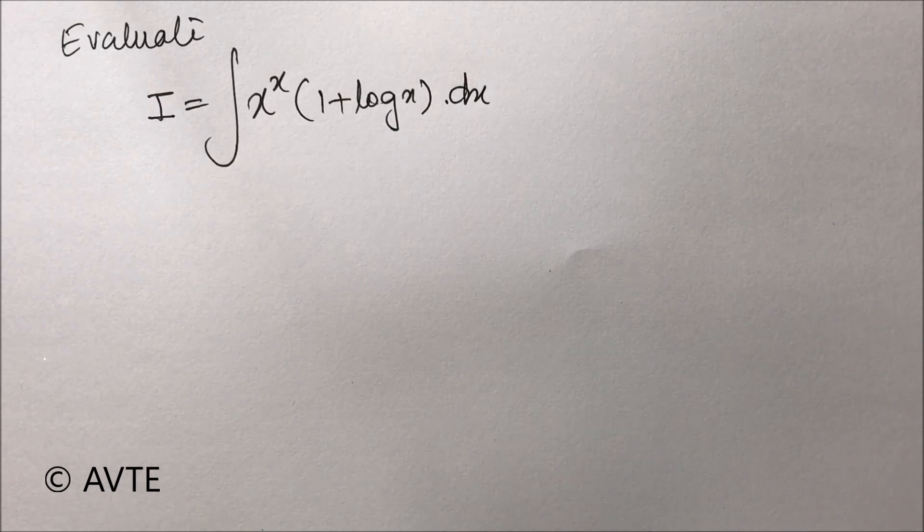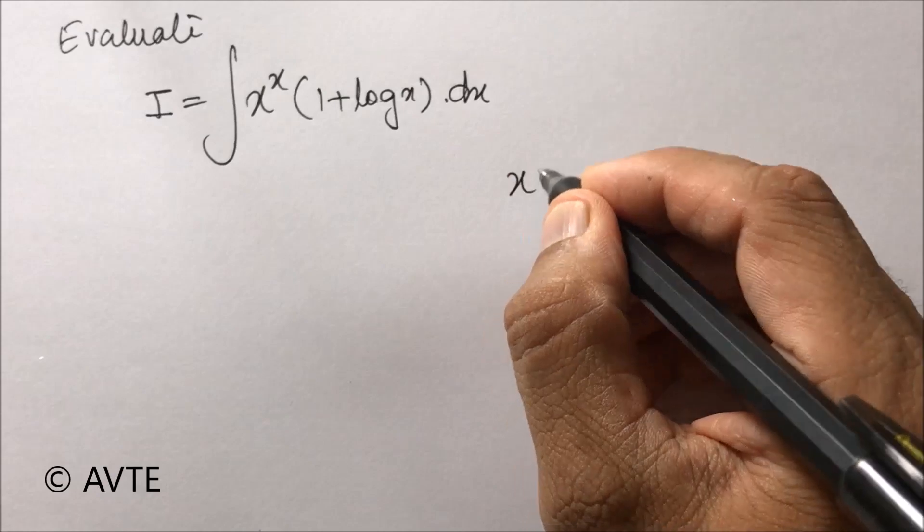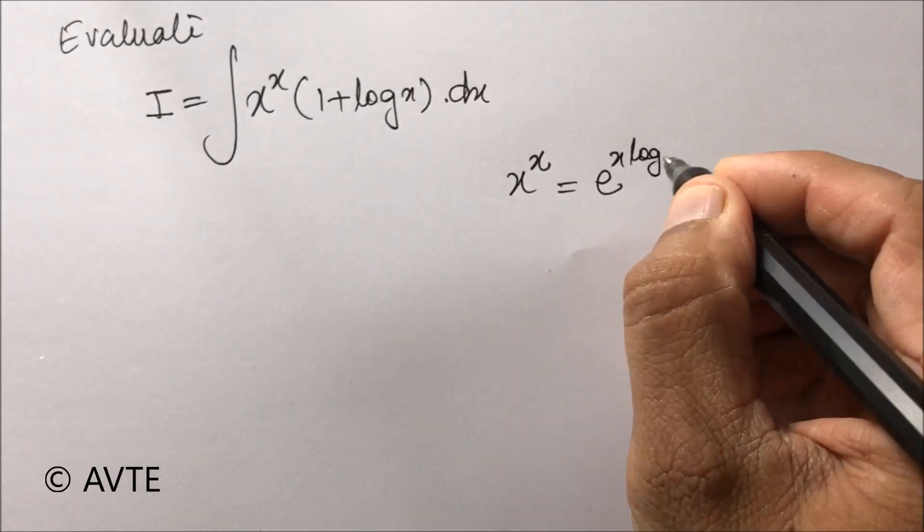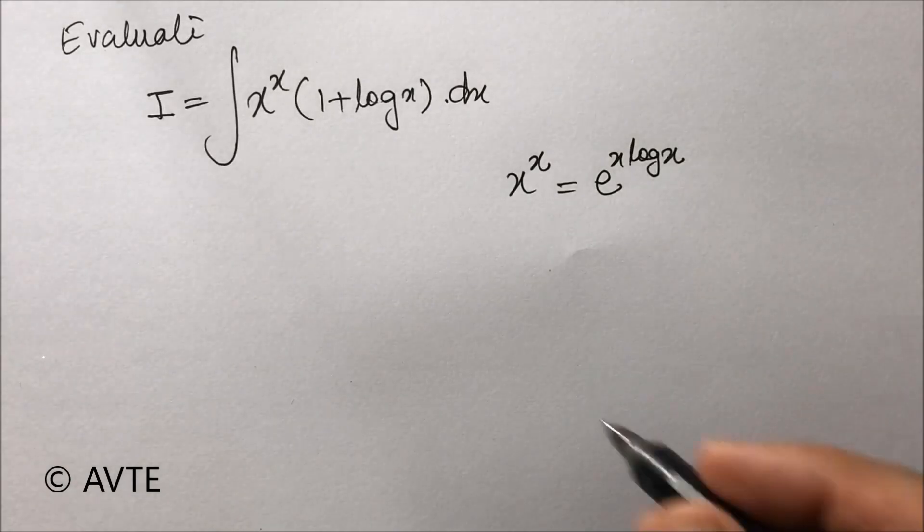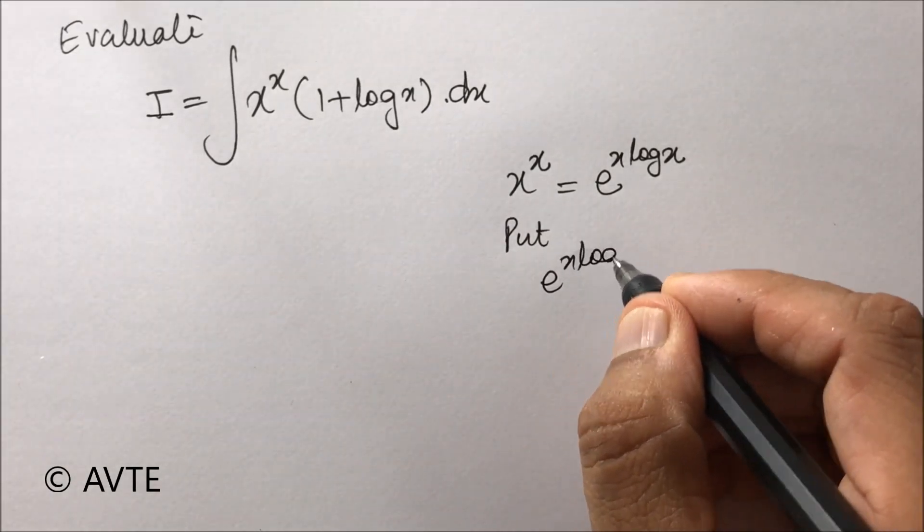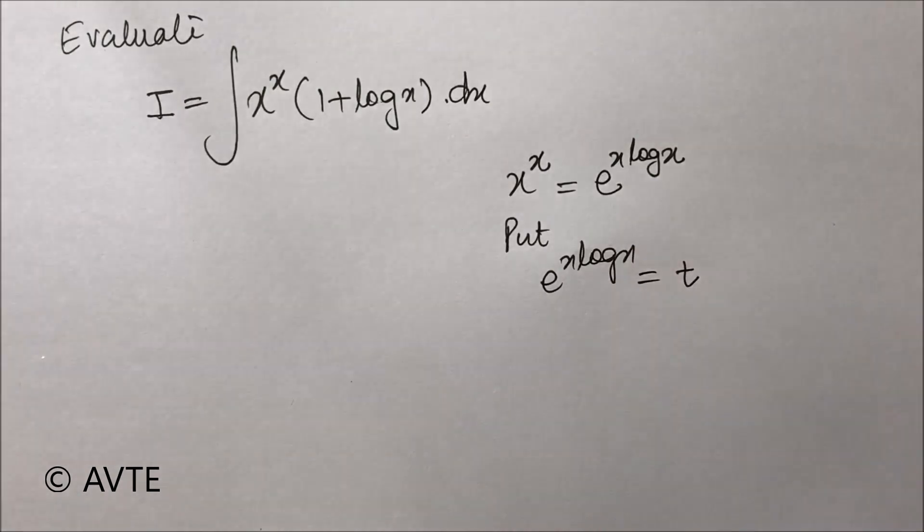One method is that you can write x^x as e^(x log x) using the property, and then you can put e^(x log x) equals t and change the respect.